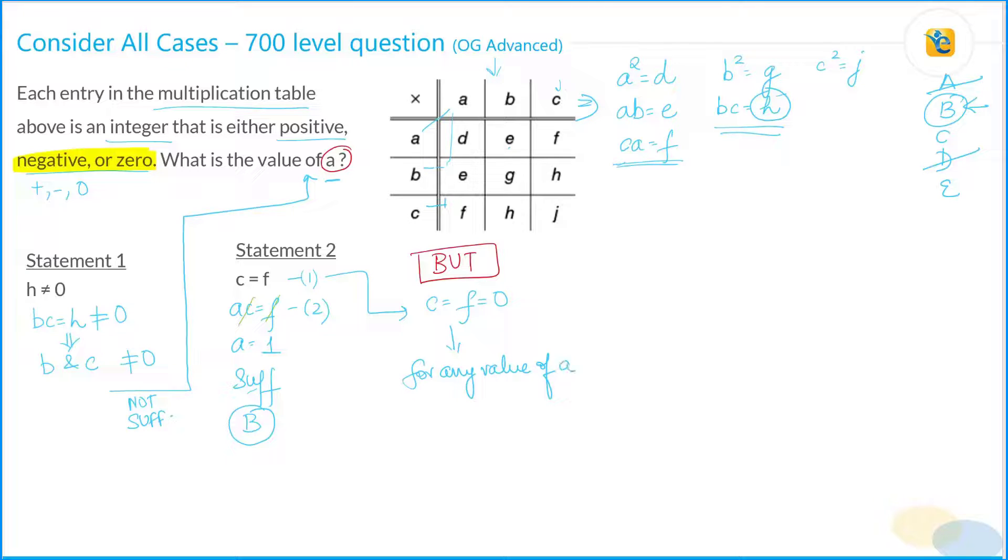What if c and f, they are equal according to statement number two and these two values are actually zero? In that case, a times c is equal to f will be true for any value of a, which means that statement two is not sufficient. Which means that B is not the correct answer.